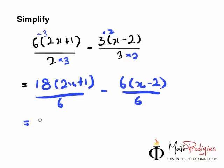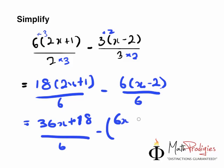And in this case, 18 times 2x gives you 36x, plus 18, over 6, minus 6x. And you must make sure you put a bracket here because it's already opened on the side there. 6x minus 12, over 6. You must remember to put a bracket there.